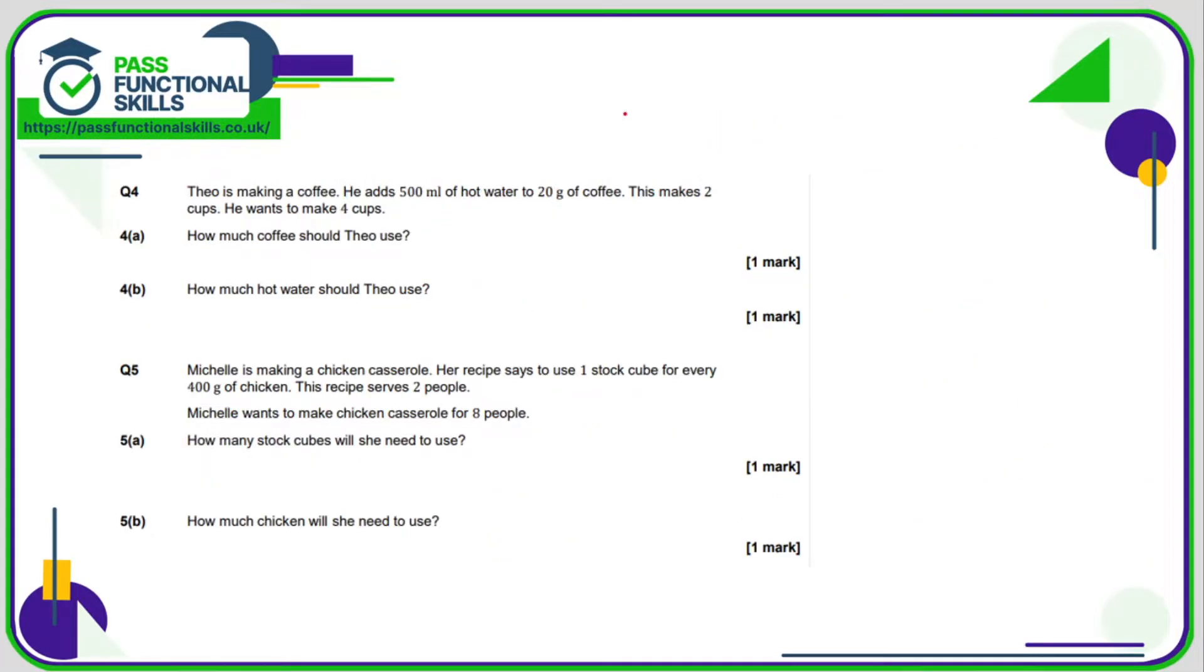For coffee it's 500 milliliters of water, 20 grams of coffee, and that makes two cups. So if Theo wants to make four cups, that's double the amount. He's going to need double the coffee, so 20 times two which is 40, and double the water which is 1000 milliliters or one liter.